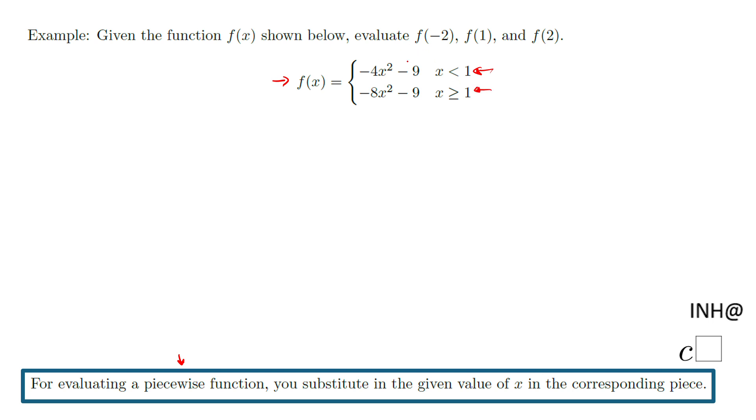And we need to evaluate this function at negative 2, that is the meaning of f of negative 2, at 1, f of 1, at 2, f of 2. It's very important when you evaluate the piecewise function to substitute the given value of x in the corresponding piece. What do I mean by that?